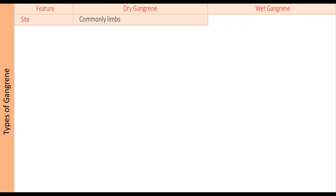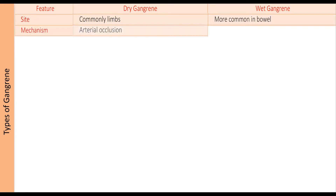We will discuss types of gangrene. We have dry gangrene and wet gangrene — dry gangrene in the lower limb and wet gangrene in the bowel. Dry gangrene is due to arterial occlusion, like sudden embolus or acute on top of chronic ischemia, meaning thrombosis on top of atherosclerosis. Wet gangrene is due to venous obstruction.